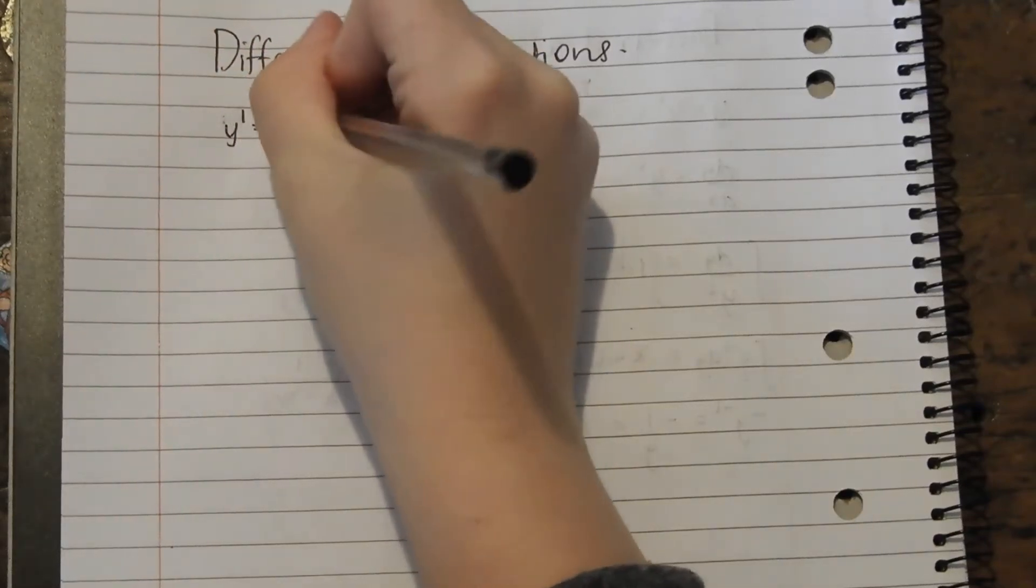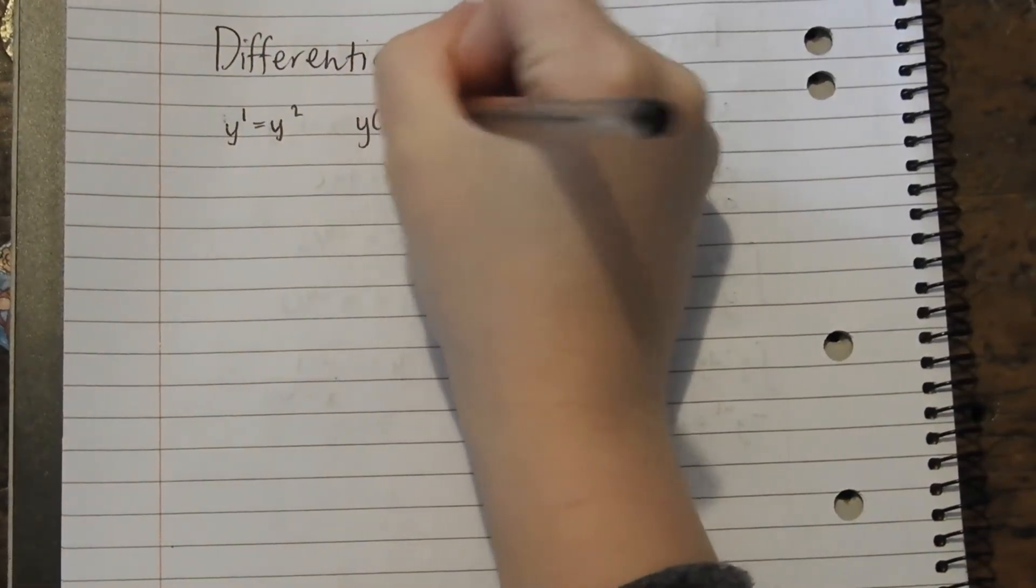So we're going to do y dash equals y squared, y of 1 equals 3.